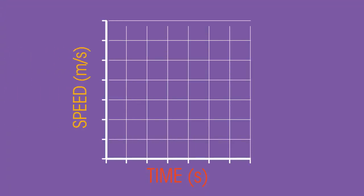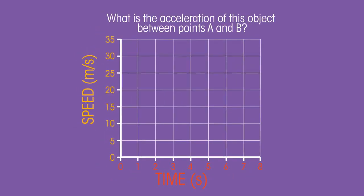The gradient of a line on a speed-time graph represents acceleration. If the gradient is positive or goes up, the object has a positive acceleration. If the gradient goes down, the object has a negative acceleration or deceleration. What's the acceleration of this object between points A and B?